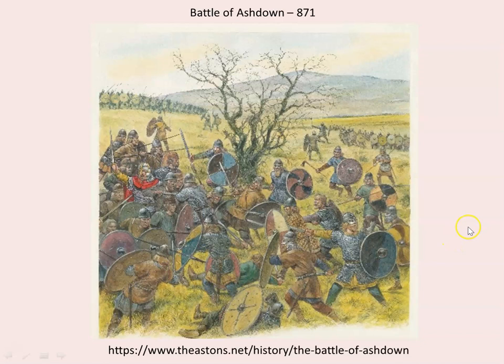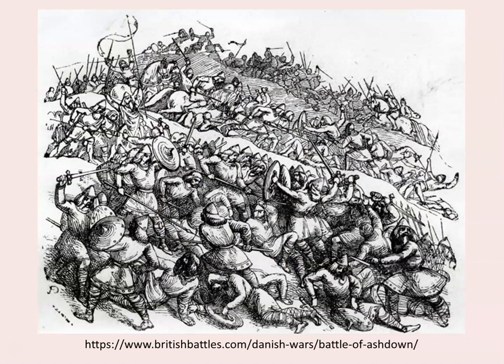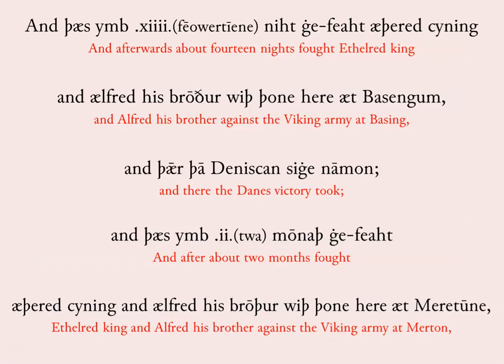And here is the Battle of Ashdown — another artist's impression. Notice the chainmail suits, the shields, the seax they carry around their waist, the sword, spear, and axes — pretty intense. Another image depicts King Alfred at the Battle of Ashdown, clearly the central figure. This period was also referred to as the Danish Wars, since it was mostly a Danish Viking army.